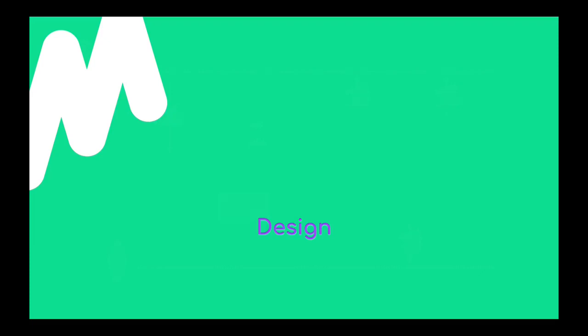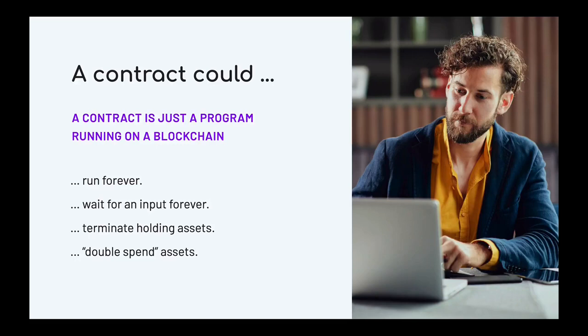Now let's think about how to design a language based on those ingredients. When we design a language of contracts, what we're really doing is designing a programming language — a contract is just a program running on a blockchain. So a contract in principle could run forever, could get stuck waiting for an input forever, could terminate holding onto assets and lock them up forever, or could even try to double spend. There are a whole lot of security issues a contract might have.